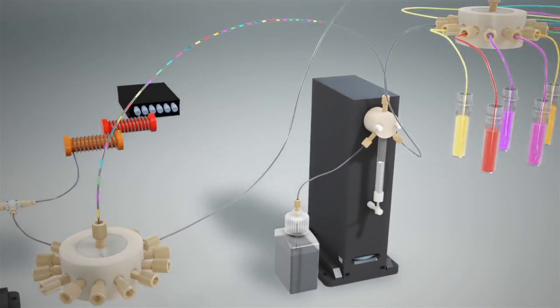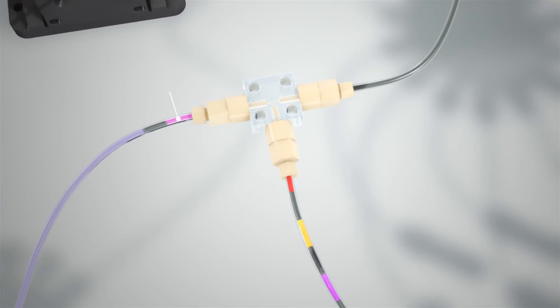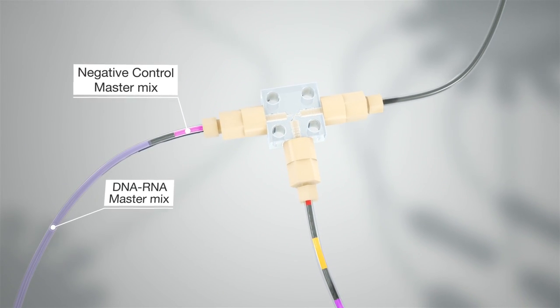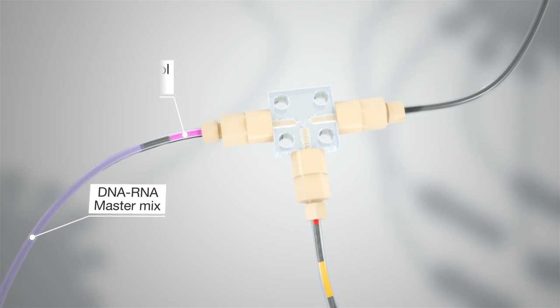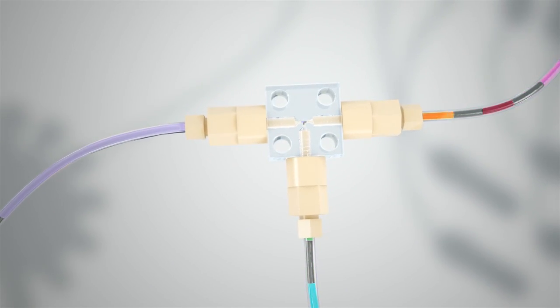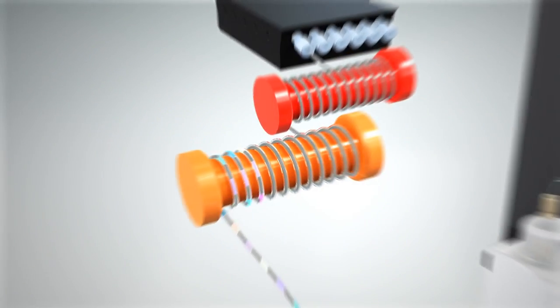The instrument delivers this reagent train to a T-junction where the instrument combines the negative control with the first assay slug and the DNA and RNA containing master mix with the remaining 11 assay slugs.